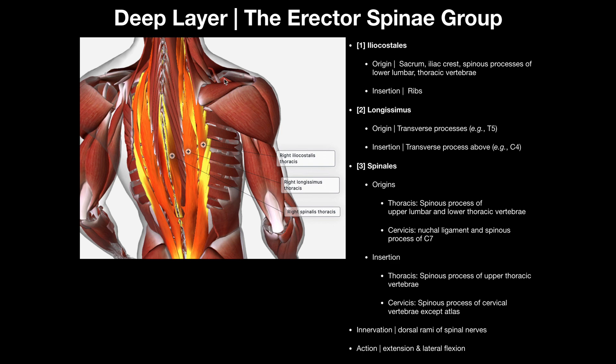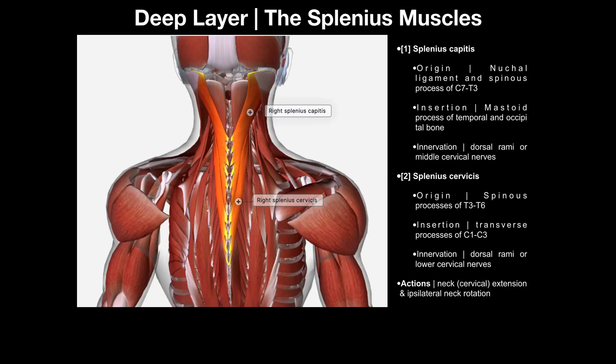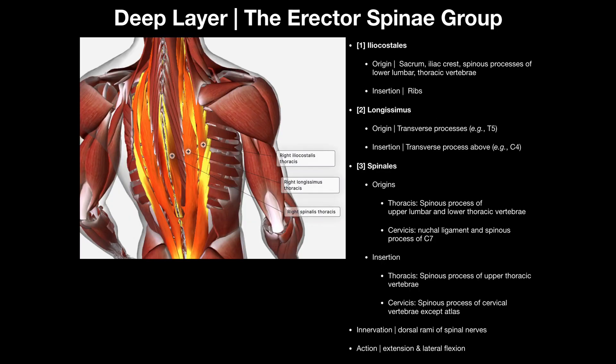We're going to move to the layer deep to the splenius — still within the overall deep layer. Remember the splenius muscles were the superficial layer of the deep layer. Now we're going to move to the intermediate layer of the deep layer, which is deep to the splenius. These are what we call the erector spinae group: a group of three muscles that are all back extensors. Collectively these are the most powerful back extensors we have. If you go to the gym and work the Roman chair or the back extension machine, these are the muscles you're working.